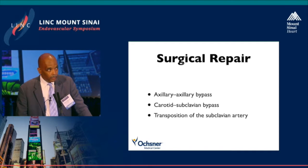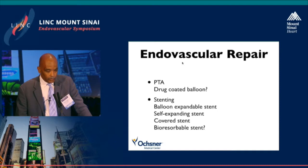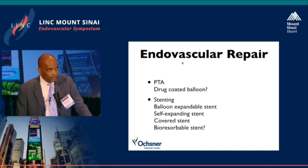If we're going to talk about revascularization procedures, we need to understand the alternatives: axillary bypass, carotid subclavian bypass, and transposition of the subclavian artery. Endovascular repair would usually be PTA, though there have been case reports using drug-coated balloons and bioresorbable stents. Stenting is probably the most commonly used method, and whether that's a balloon-expandable versus self-expanding stent depends on several factors, primarily the location and appearance of the stenosis.